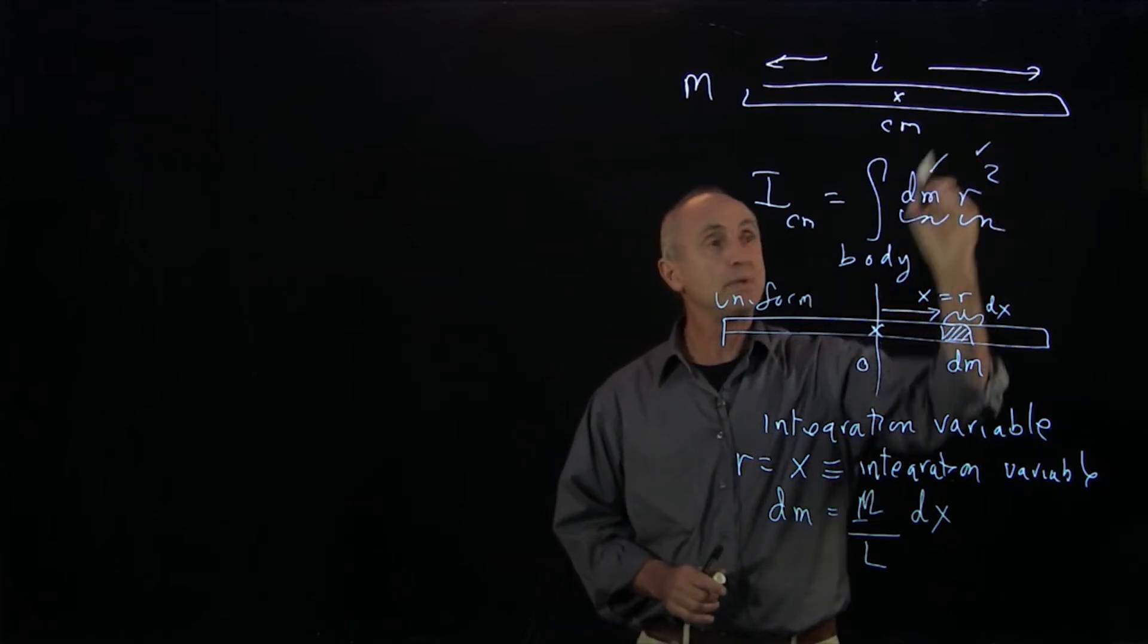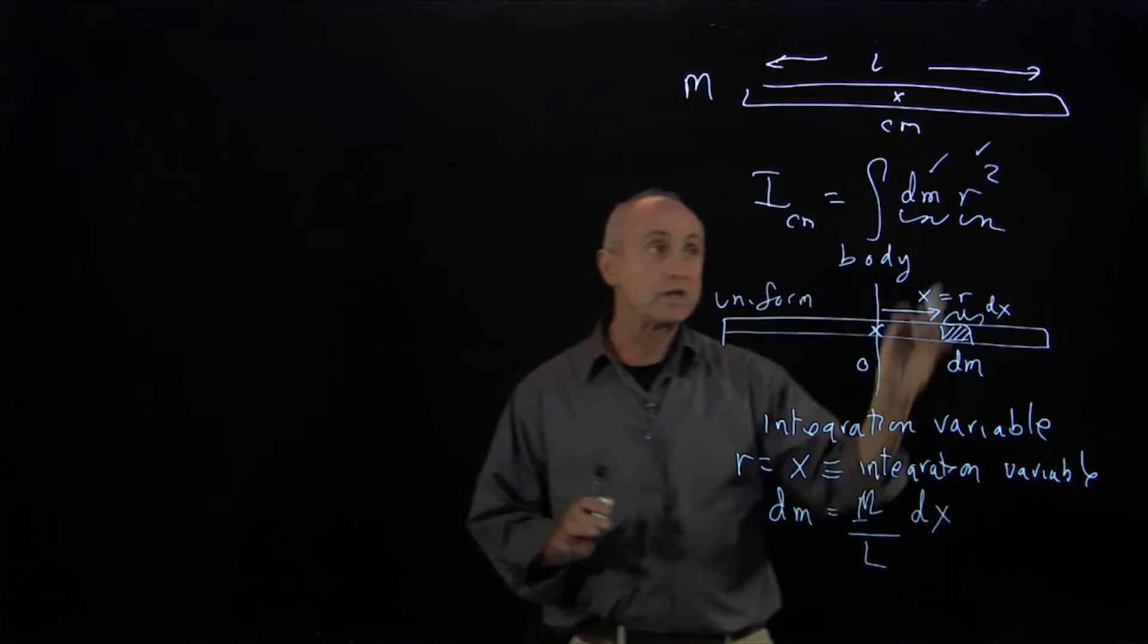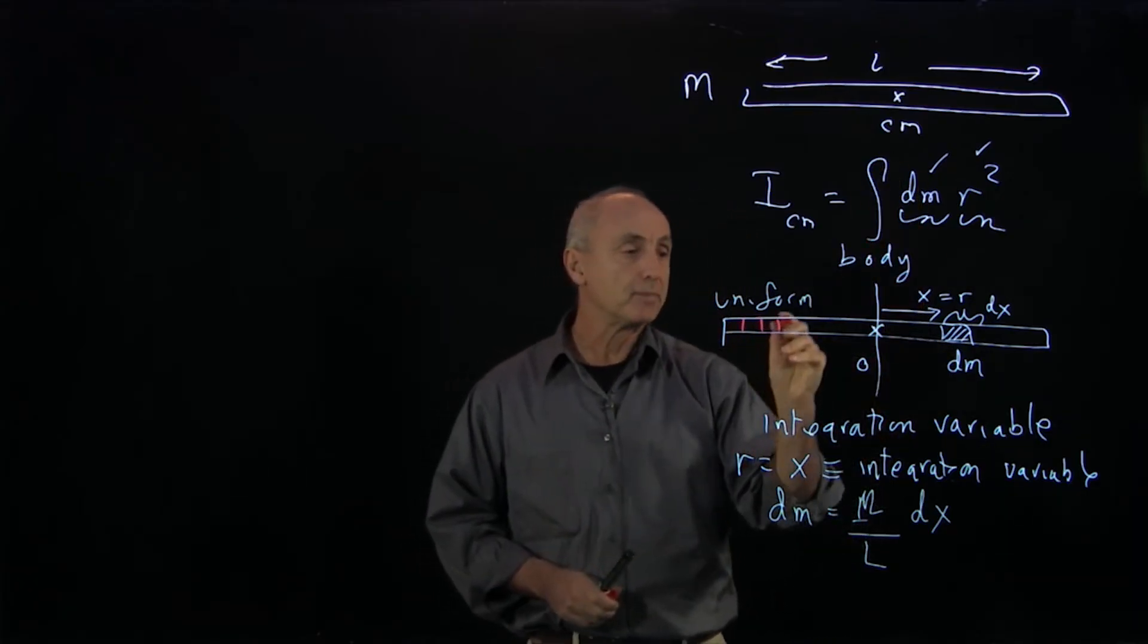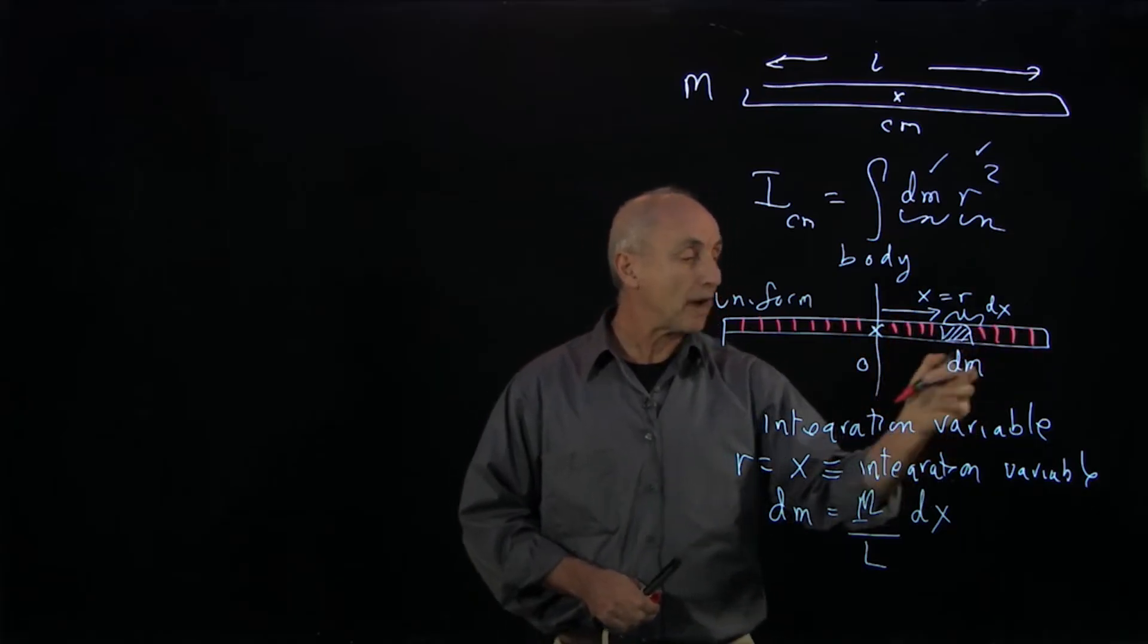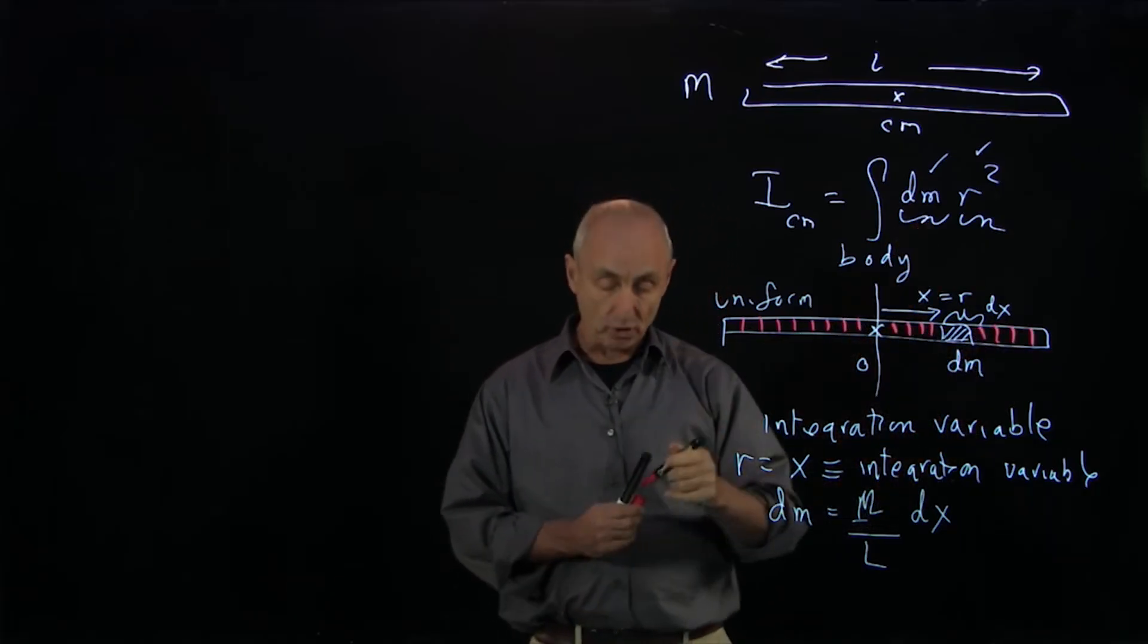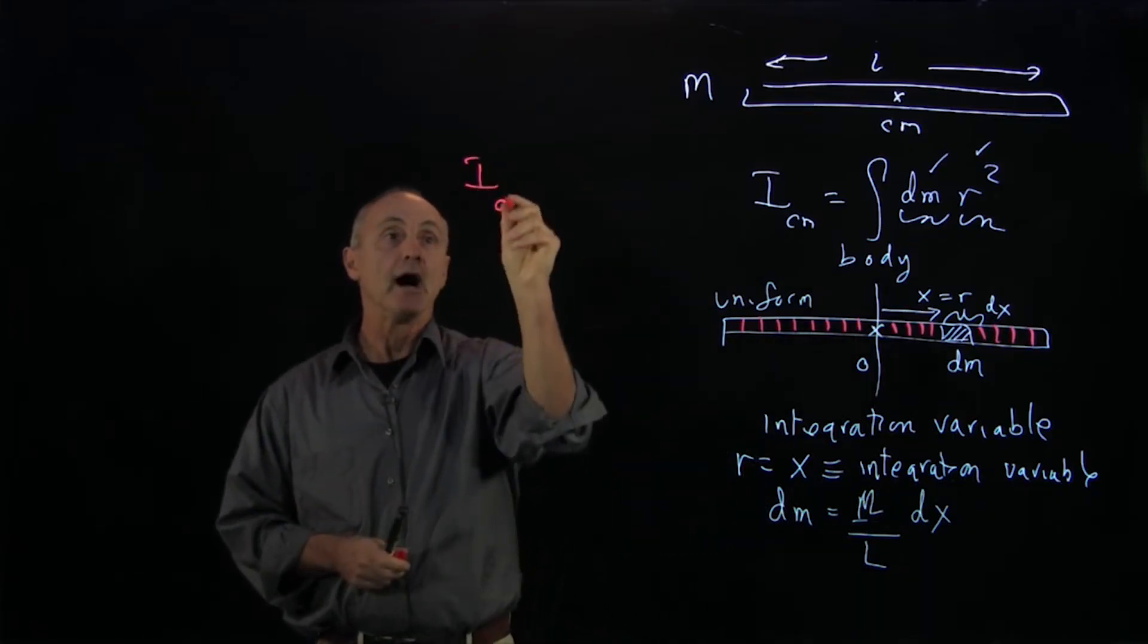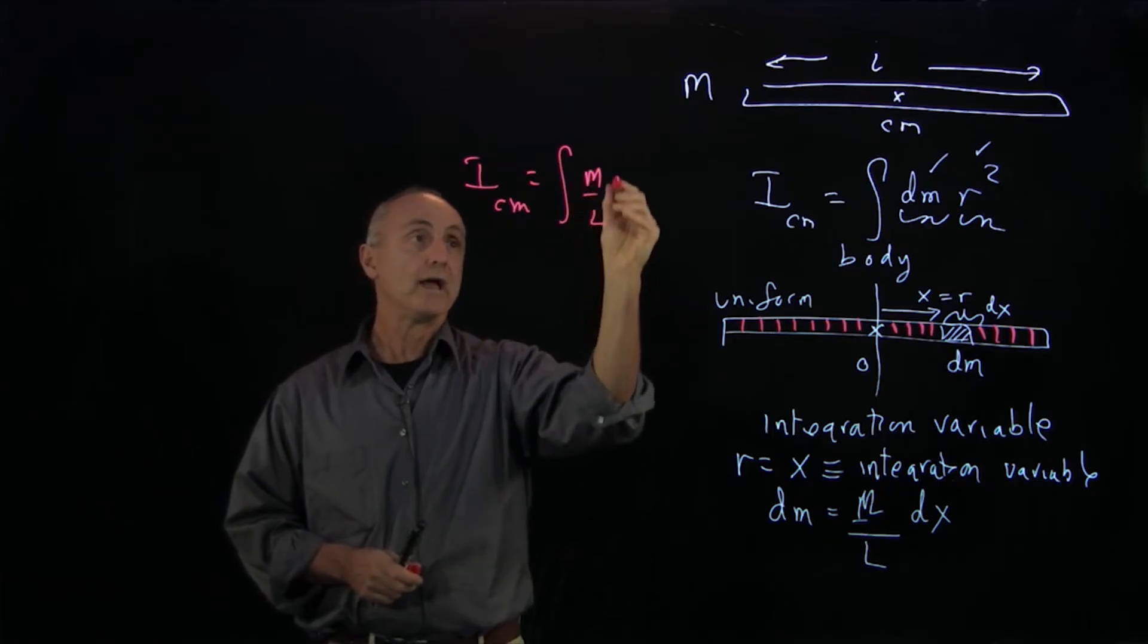Now we've set up the two pieces that are crucial. All we have to think about now is what an integral means. An integral means that we're dividing up the piece into a bunch of small elements and adding the contribution of each small element. So when we write I_cm, we can write it as m over l dx.